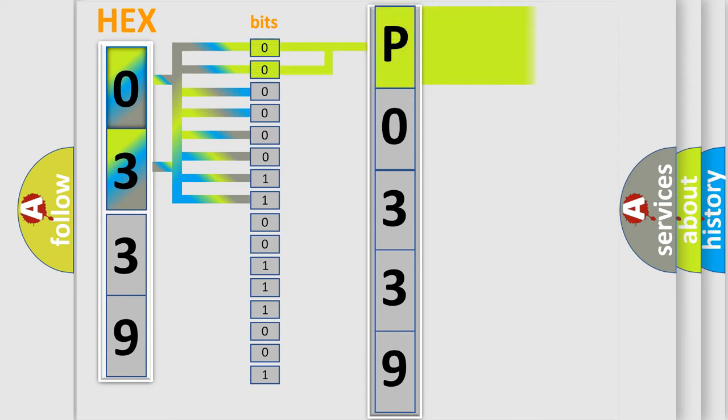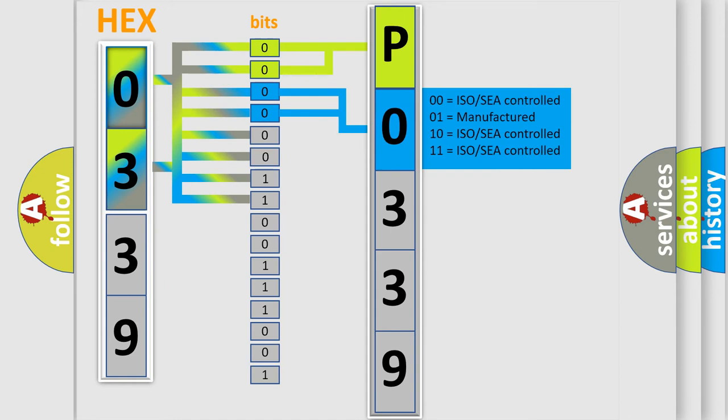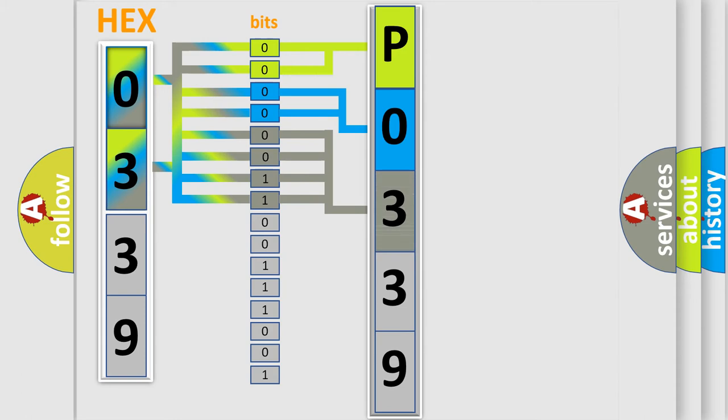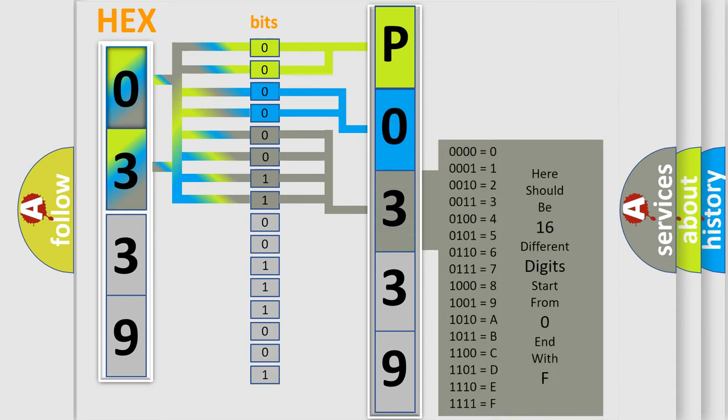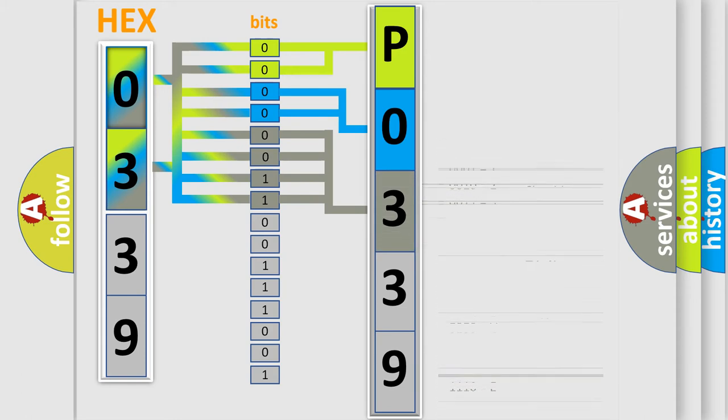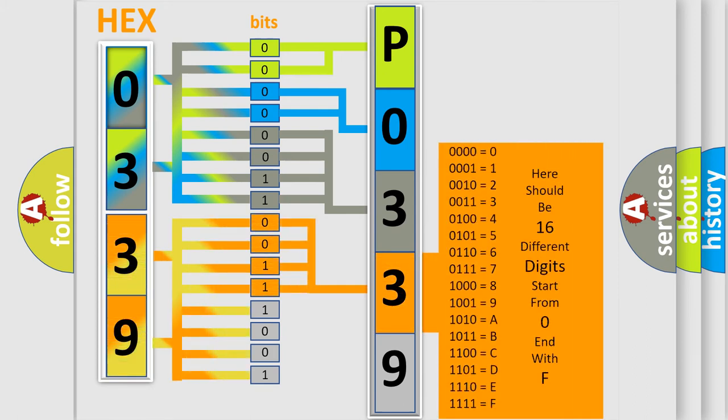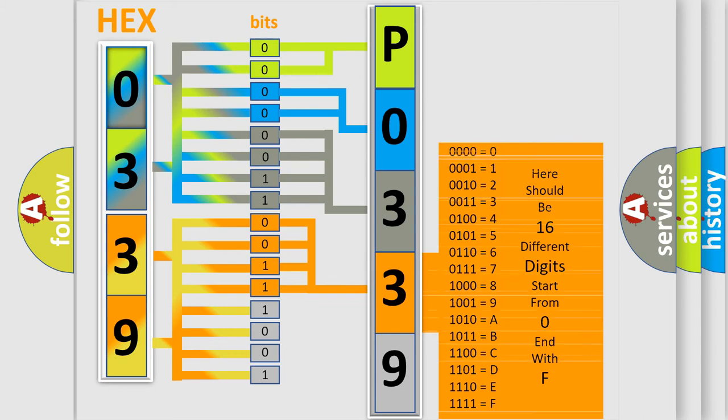By combining the first two bits, the basic character of the error code is expressed. The next two bits determine the second character. The last bit styles of the first byte define the third character of the code. The second byte is composed of a combination of eight bits. The first four bits determine the fourth character of the code, and the combination of the last four bits defines the fifth character.